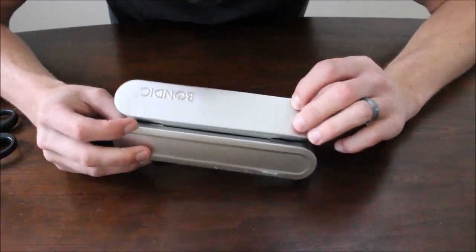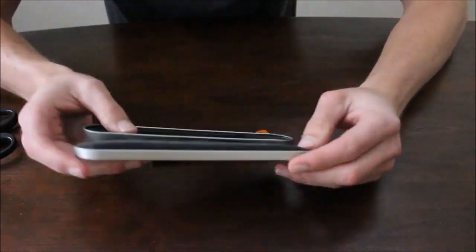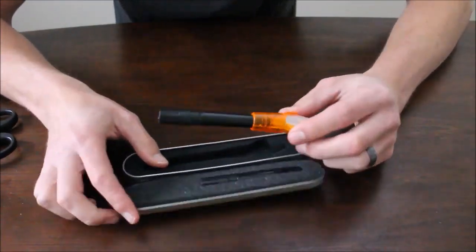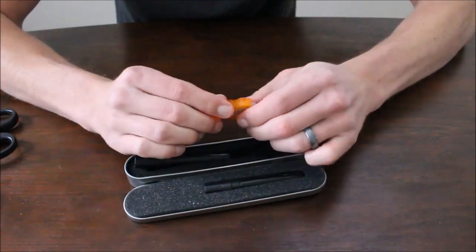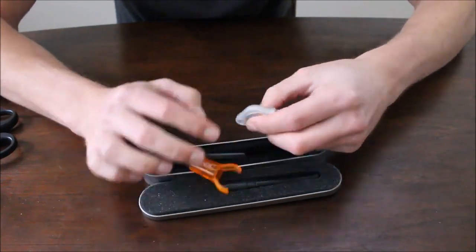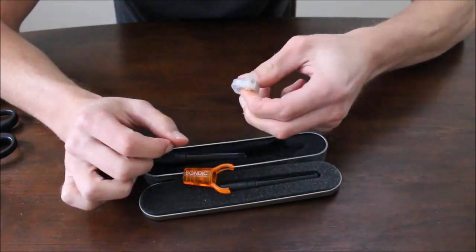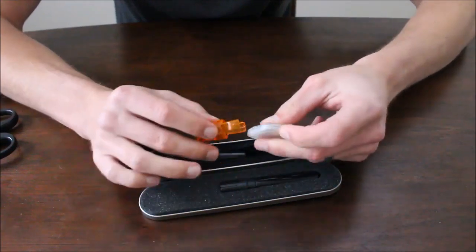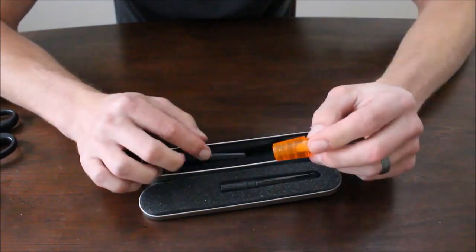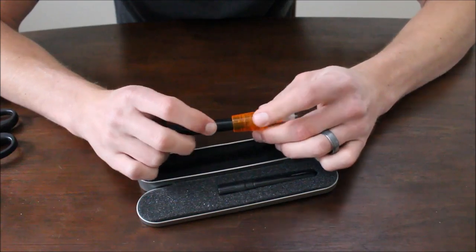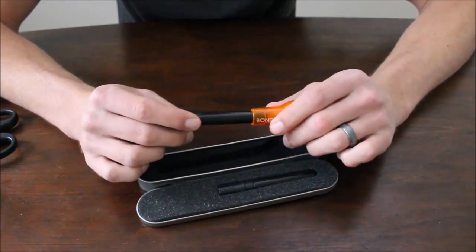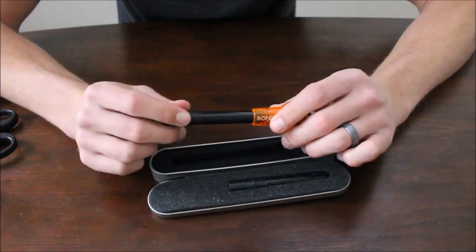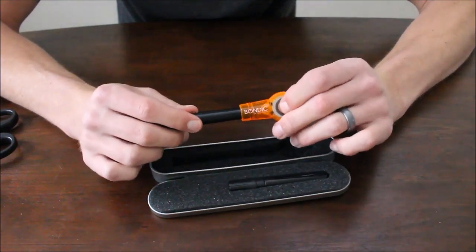Alright, so here it is. It comes in this nice little tin case, it says Bondic on it, seems pretty durable and good to store it in. It's got three pieces to it: the actual liquid itself, the handle that holds the little light. There you go, you see that? That's a UV light. So it says that this stuff only dries underneath this UV light, it won't dry just under natural light. If you have it on your hands it should be able to just come off unless you put this light on it.